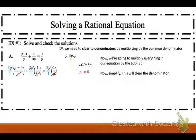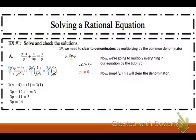So I'm left with 3 times (p minus 4) plus 1 equals 3 times 1. Multiplying that all out, I get 3p minus 12 plus 1 equals 3, which simplifies to 3p minus 11 equals 3. Add 11 over: 3p equals 14, so p equals 14 over 3. I'll leave that as a fraction — that's completely fine. 14 over 3 is not 0, so we're good. That's our final answer.